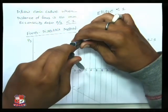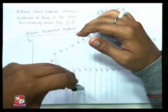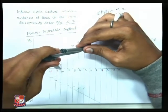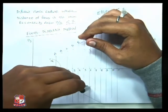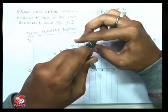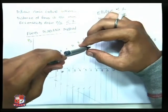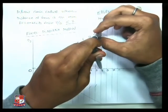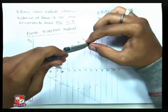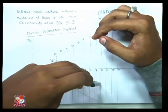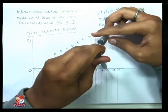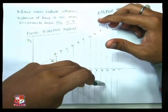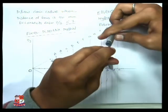5 to f — f as center. The center f is the common center. 6 to g — center is again f. You can see gradually this portion coming down because the eccentricity ratio is 2 by 3, which is less than 1. That is why it is coming down. 9 to j. 10 to k.